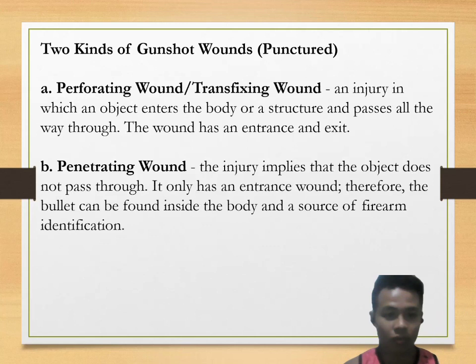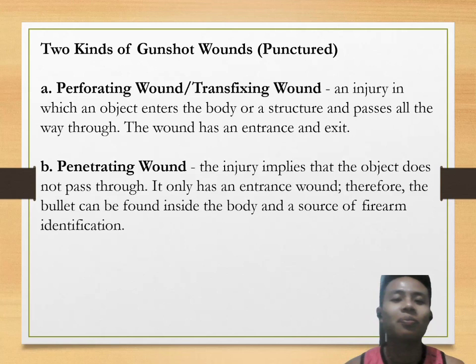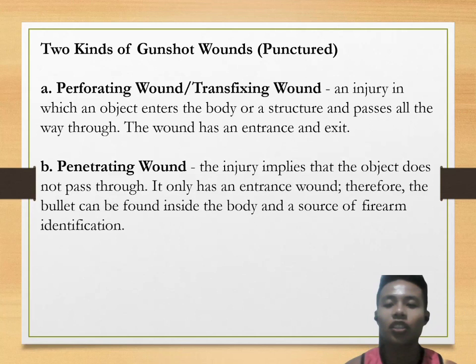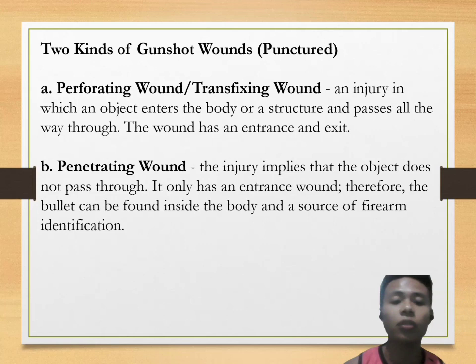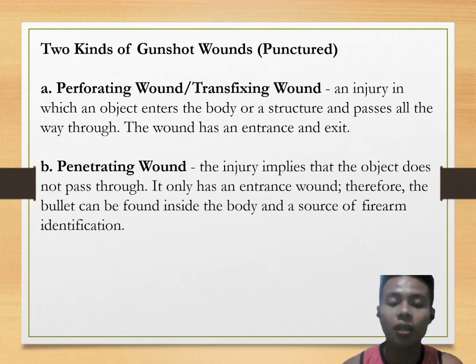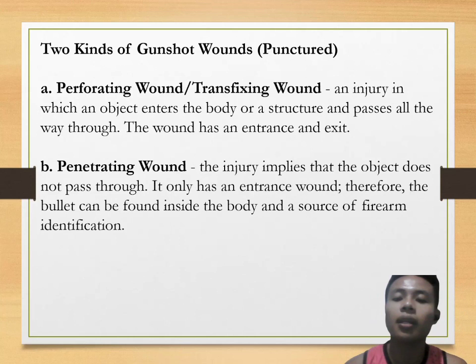There are two kinds of gunshot wounds: perforating wound and penetrating wound (also called transfixing wound). A perforating wound is an injury in which an object enters the body and passes all the way through — it has both an entrance and an exit. A penetrating wound implies that the object does not pass through; it only has an entrance wound, meaning the bullet can be found inside the body and can be a source of firearm identification.